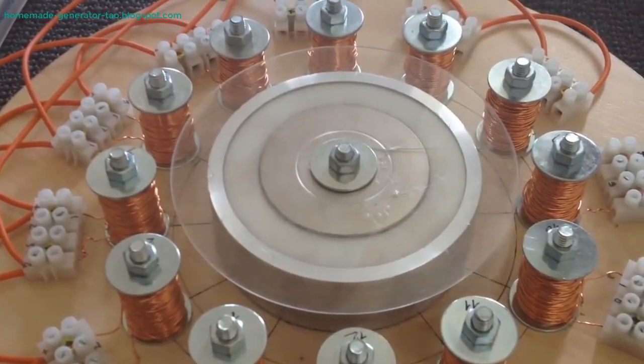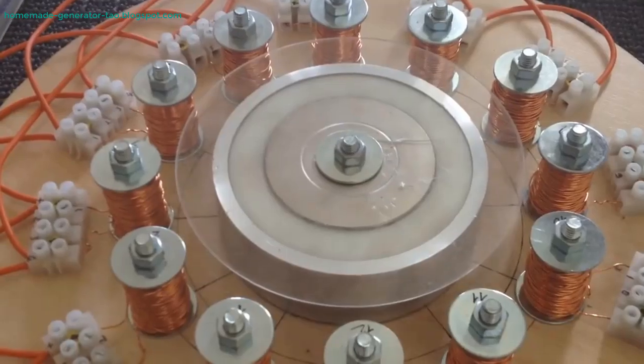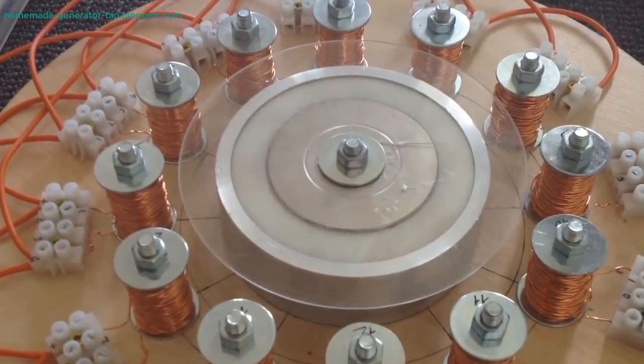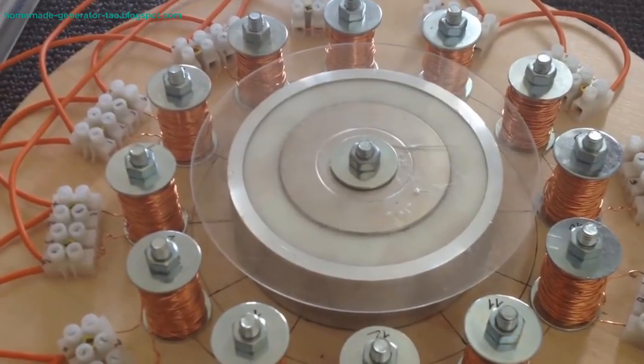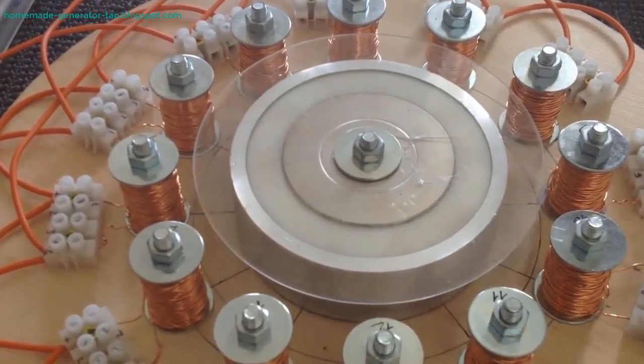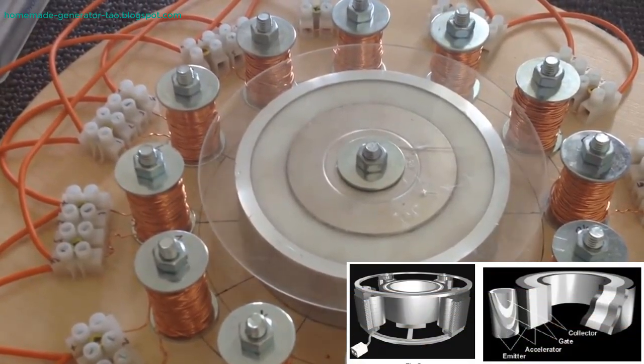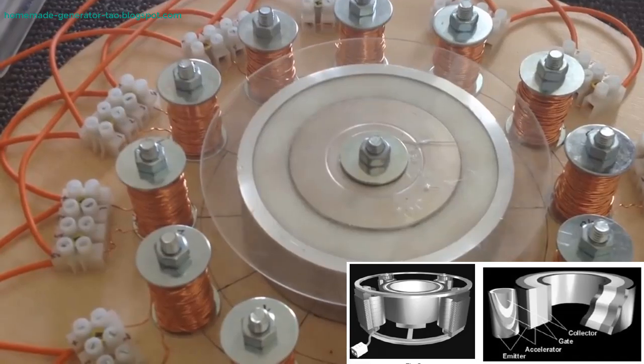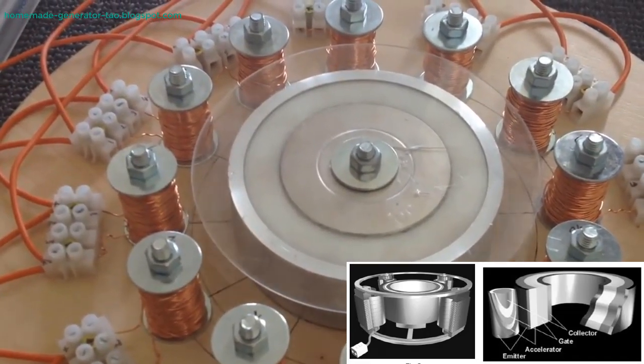The manufacturing process for these permanent magnets was intricate. Searle utilized a mixture of magnetic powder and a bonding agent, which was then pressed into molds using a hydraulic press within a vacuum chamber. The curing process could take up to three days, indicating the meticulous care Searle took in their production. The use of nylon, a thermoplastic with excess negative charges, further enhanced the magnetic properties, leading to the manifestation of the Searle Effect.